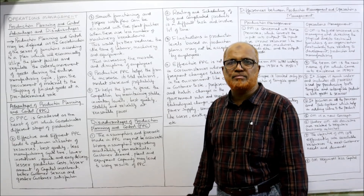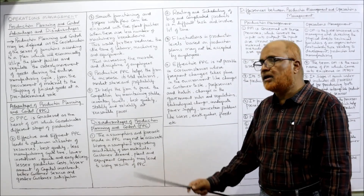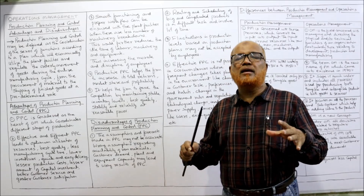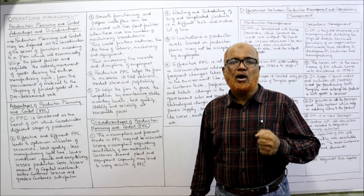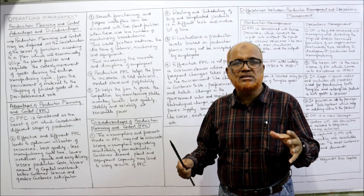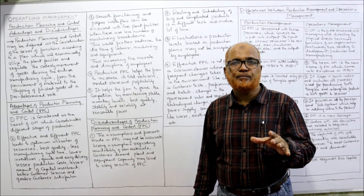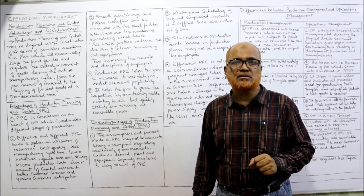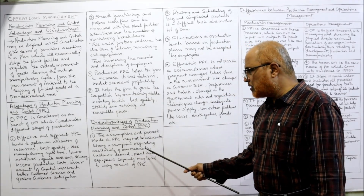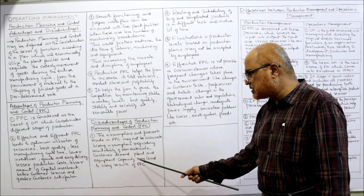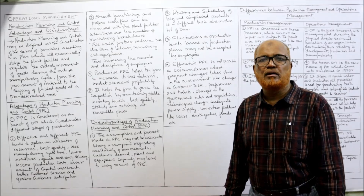Now, what are the disadvantages of production planning and control? The first disadvantage is that the assumptions and forecasts made in PPC may not be accurate. In PPC we make many assumptions regarding how much material is required, how much labor time is needed, and how many machines are required — all of these depend on forecasts. If the forecast is inaccurate, then the production planning and control will fail and will not produce good results. Wrong assumptions regarding availability of raw material, customer demand, and plant and equipment capacity may lead to wrong results.